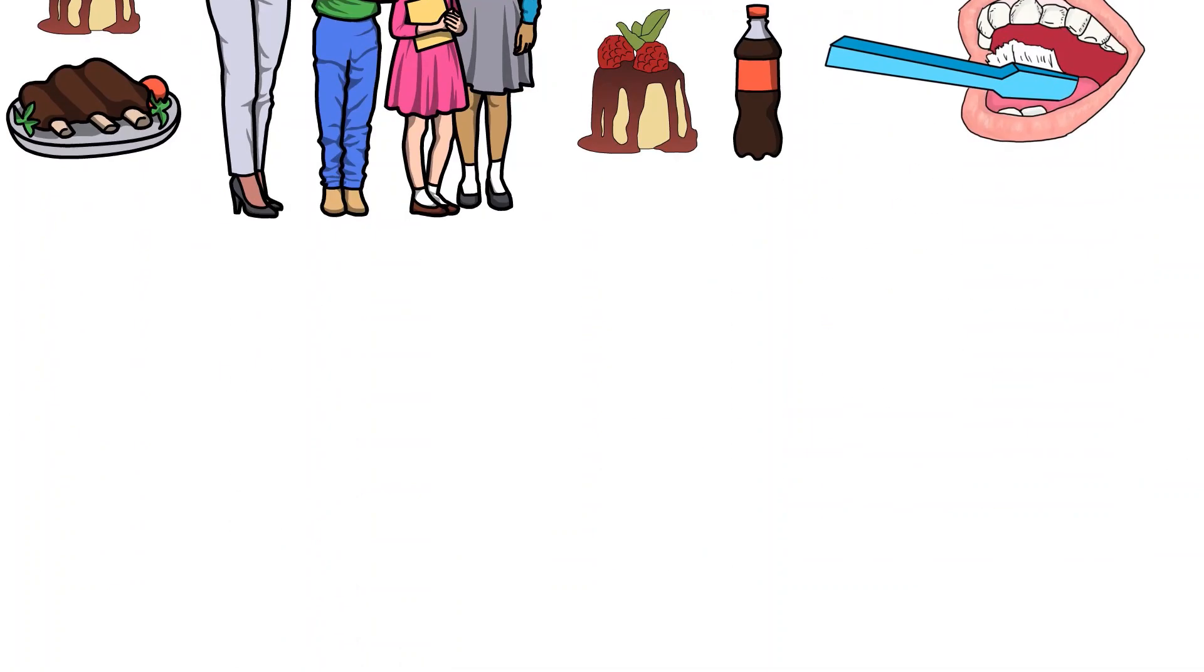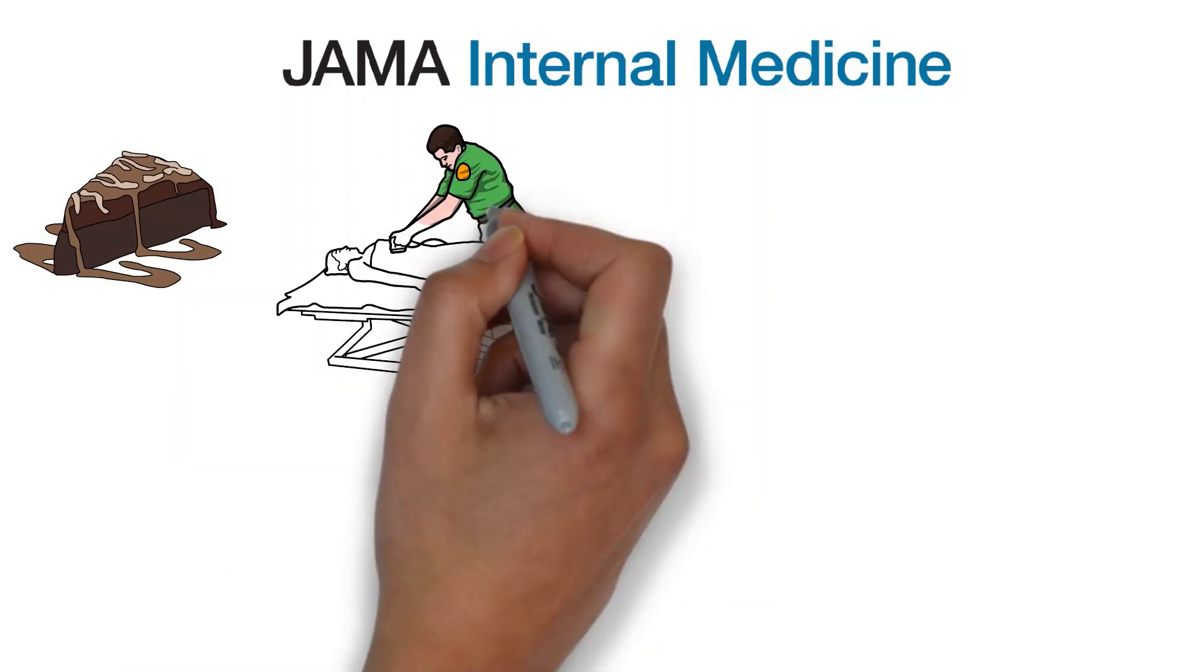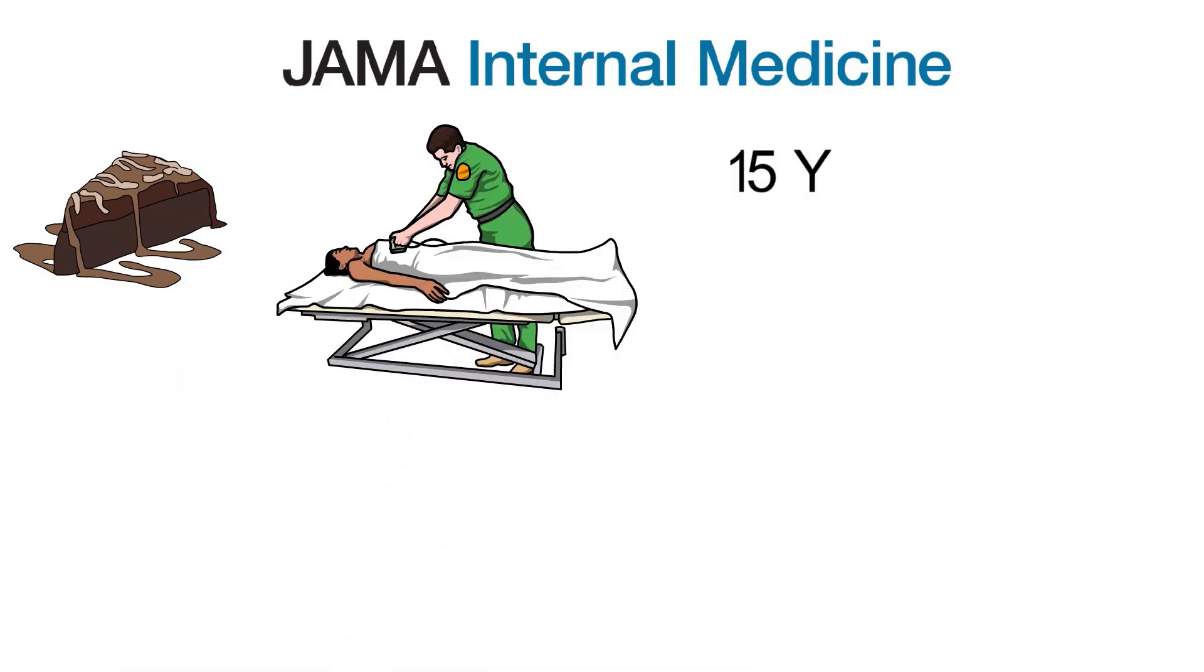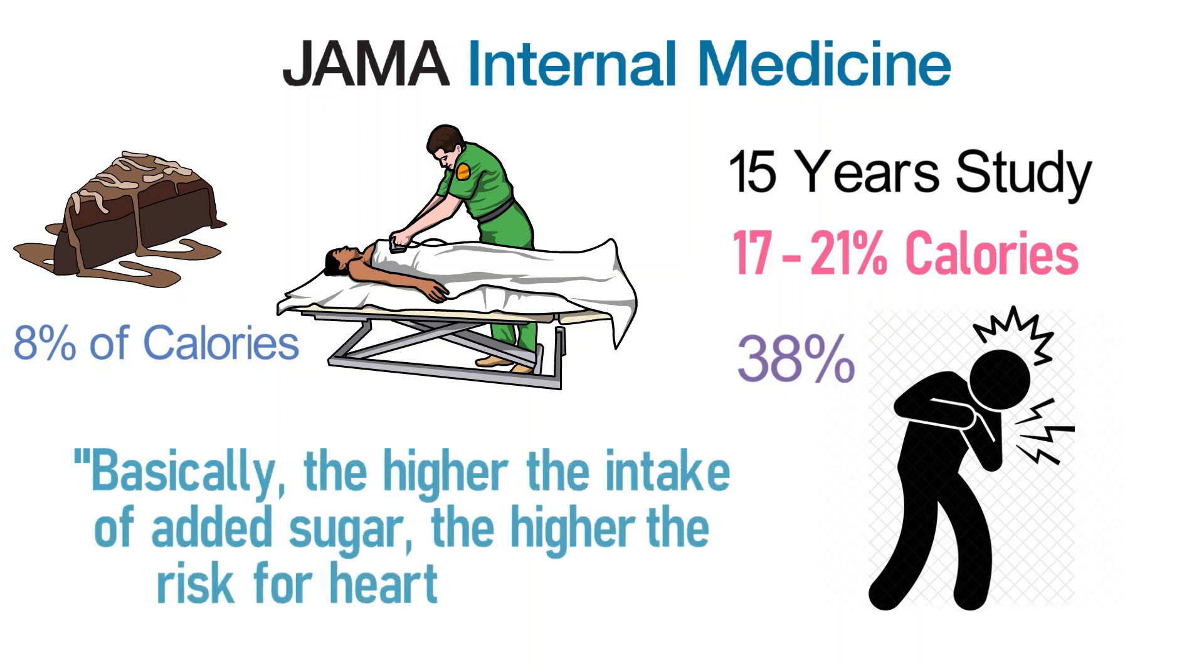In a study published in 2014 in JAMA Internal Medicine, an association between a high sugar diet and a greater risk of dying from heart disease was found. Over the course of the 15 year study, people who got 17% to 21% of their calories from added sugar had a 38% higher risk of dying from cardiovascular disease, compared with those who consumed 8% of their calories as added sugar. Basically, the higher the intake of added sugar, the higher the risk for heart disease.